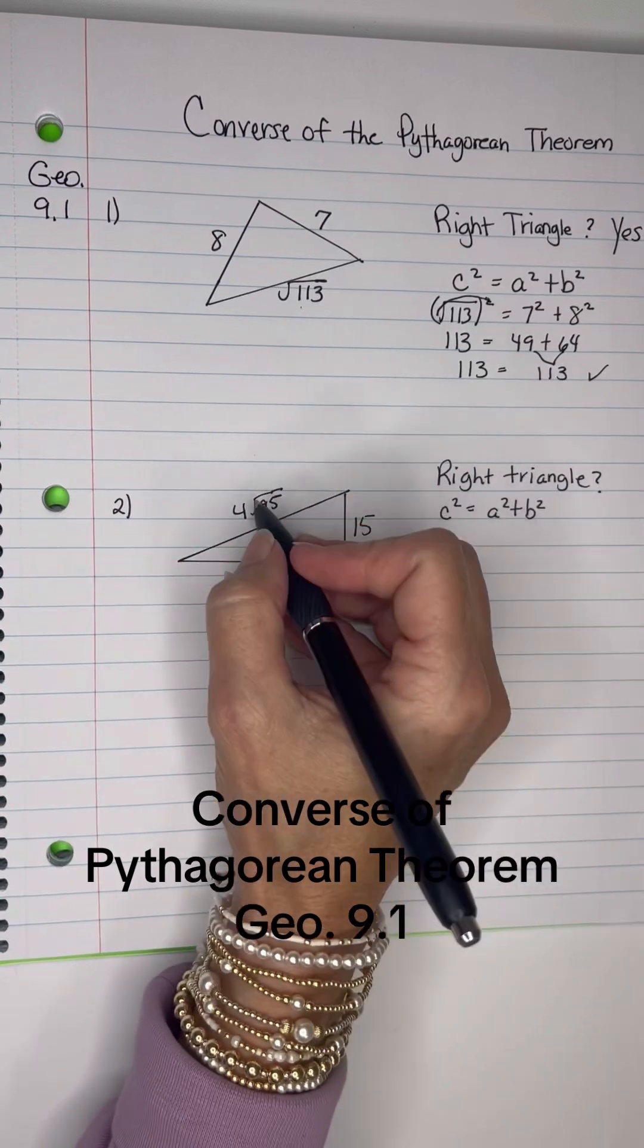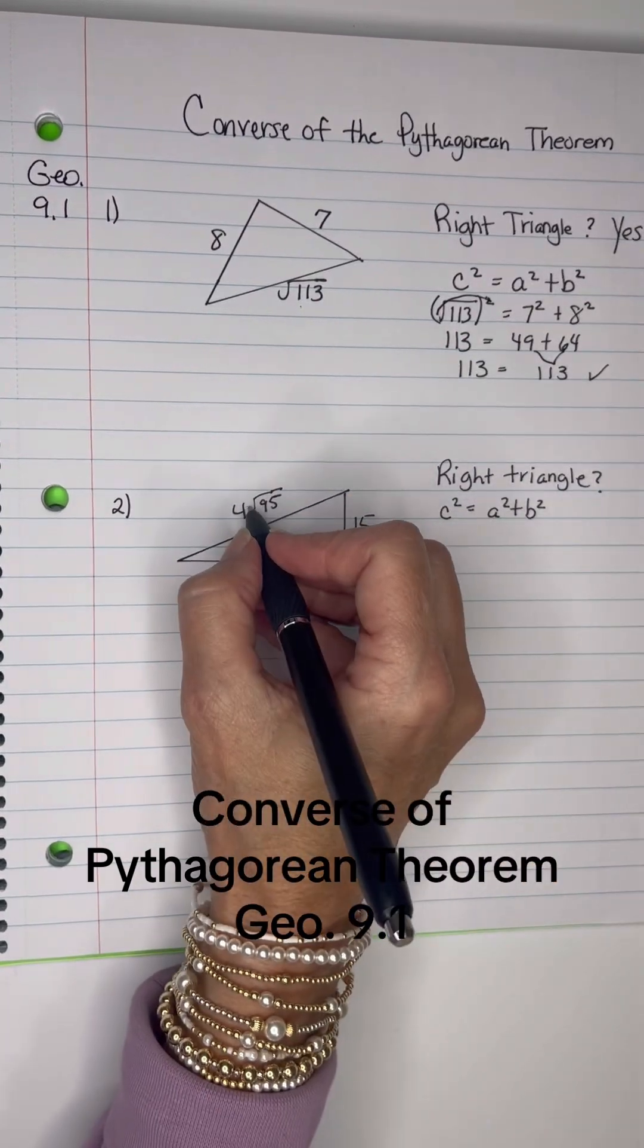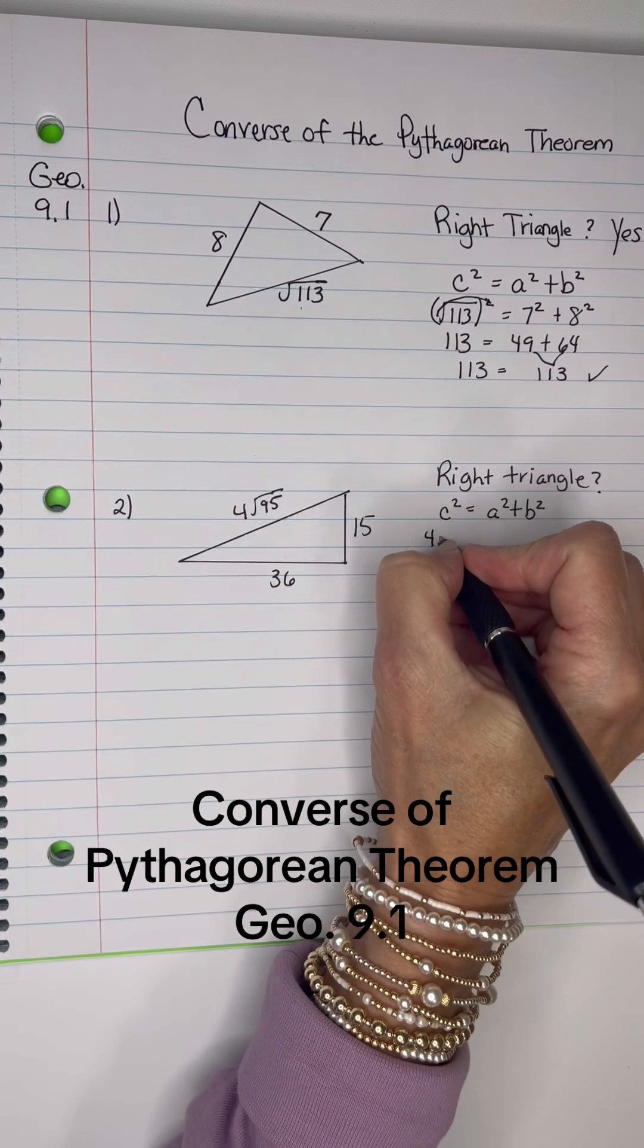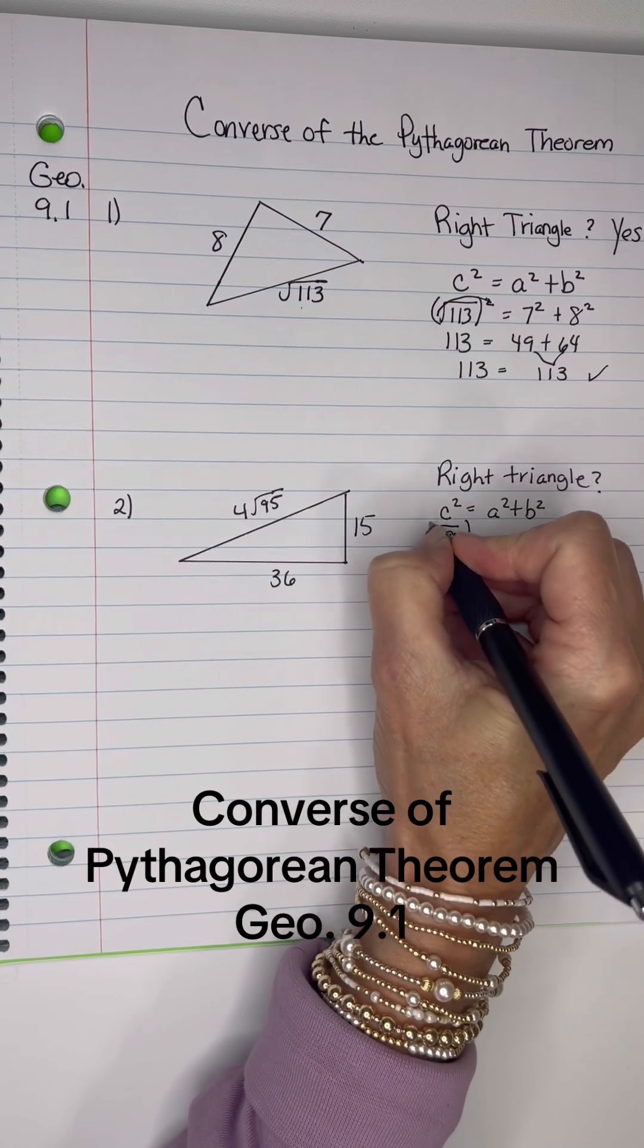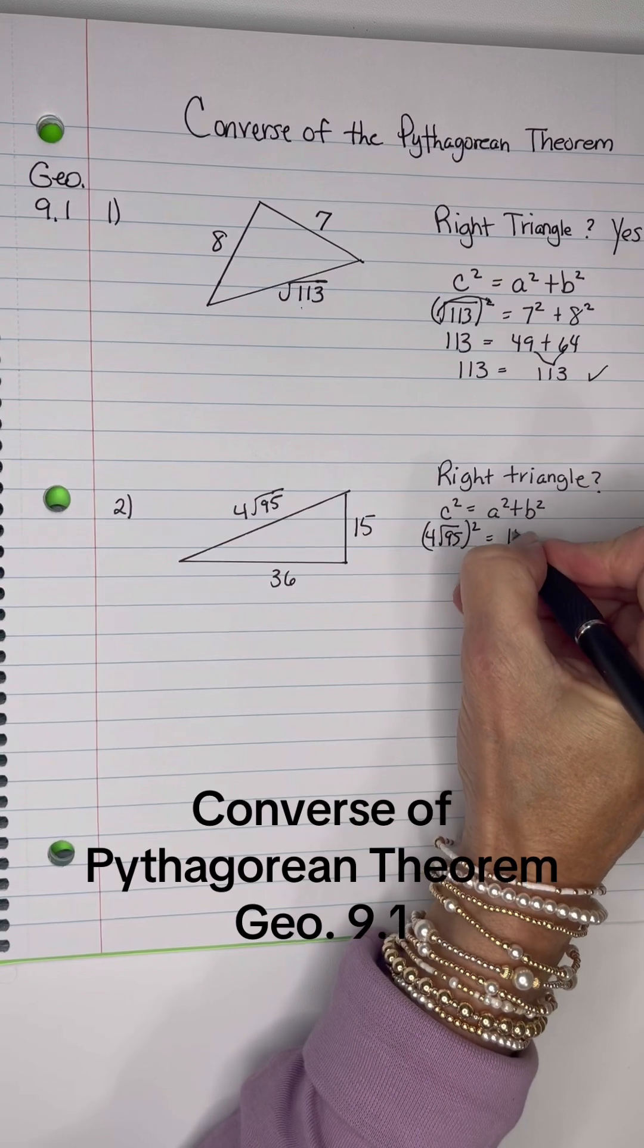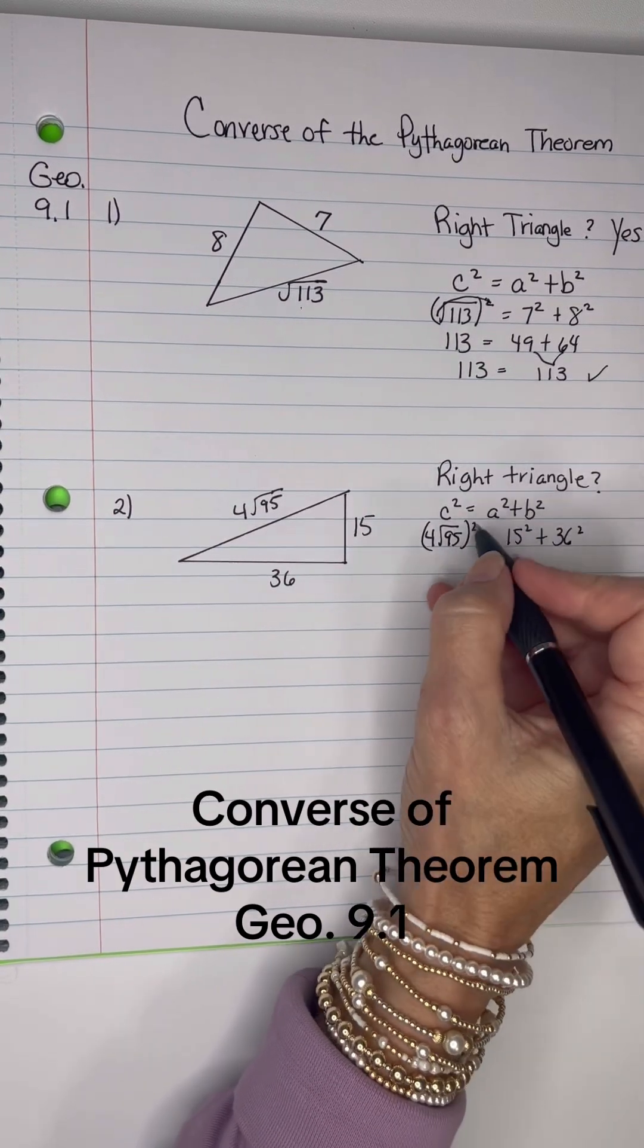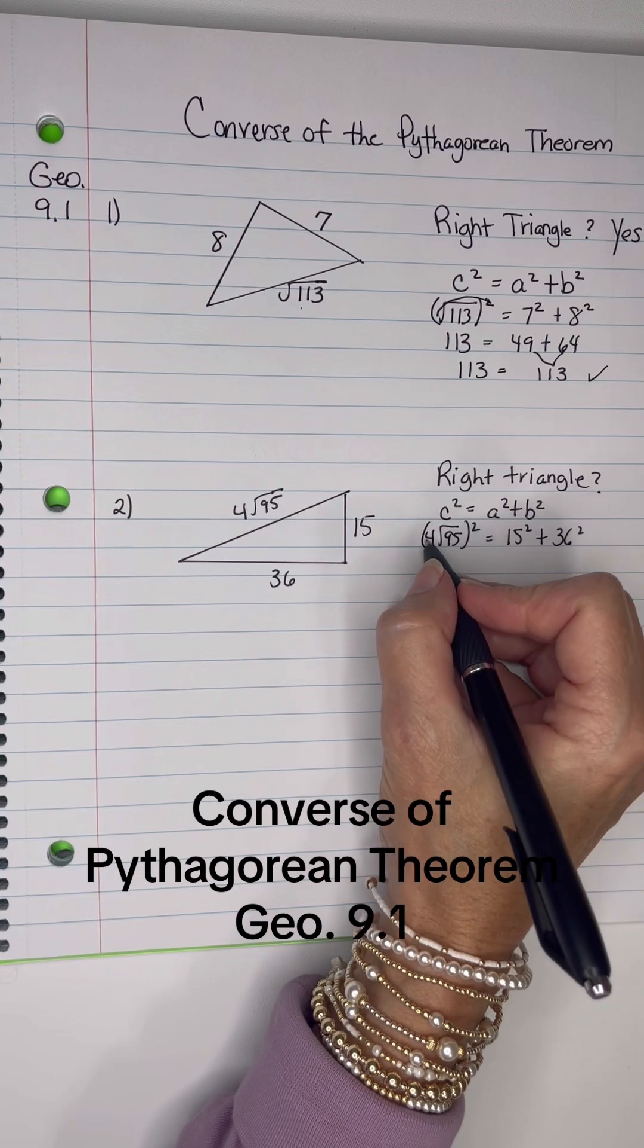All right, this is not a Pythagorean triple either, but this looks like it's the right angle on the hypotenuse, so let's put this here, and it will be squared equals 15 squared plus 36 squared. Okay, now this square is going to affect the 4.